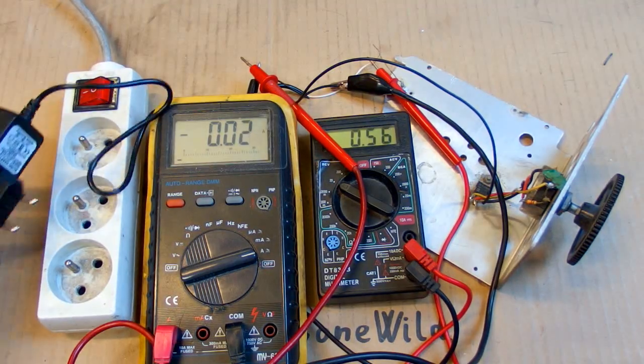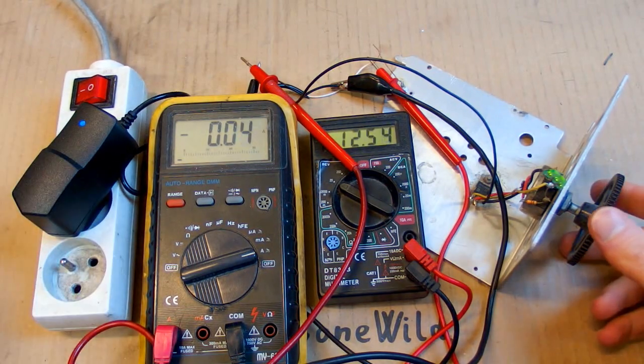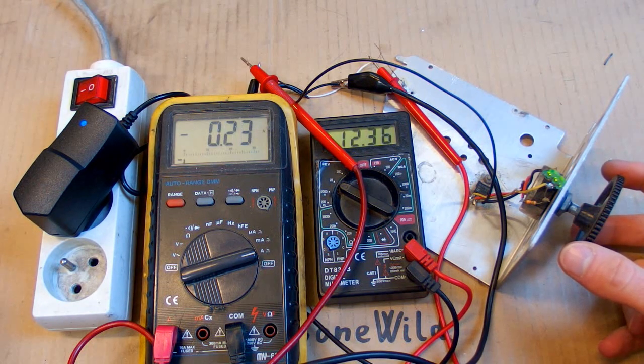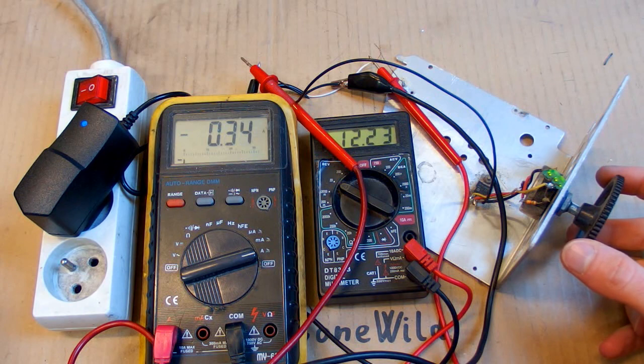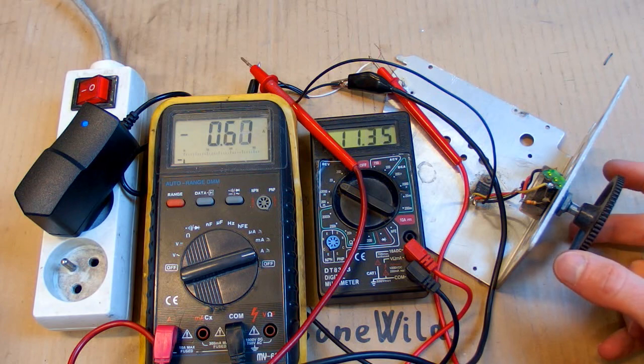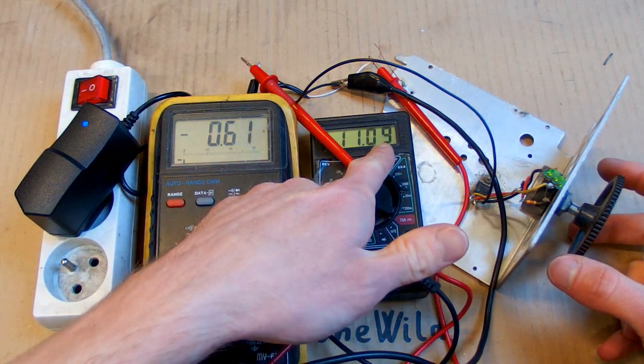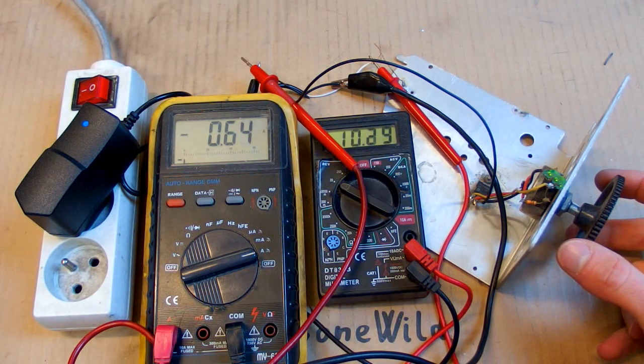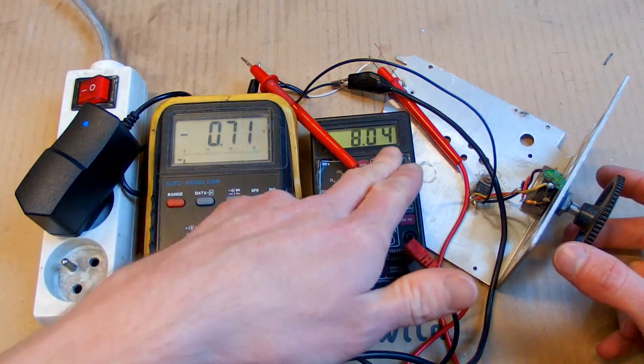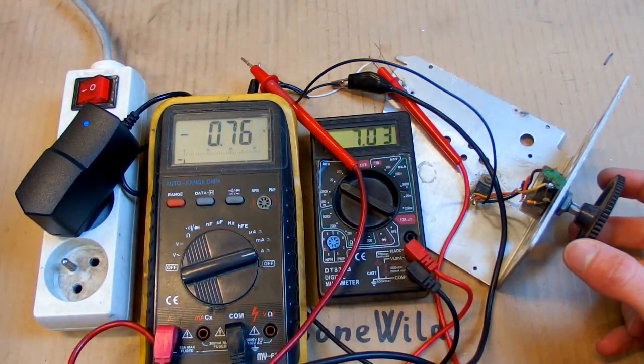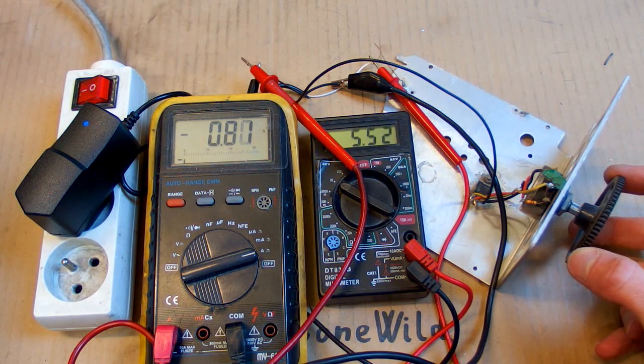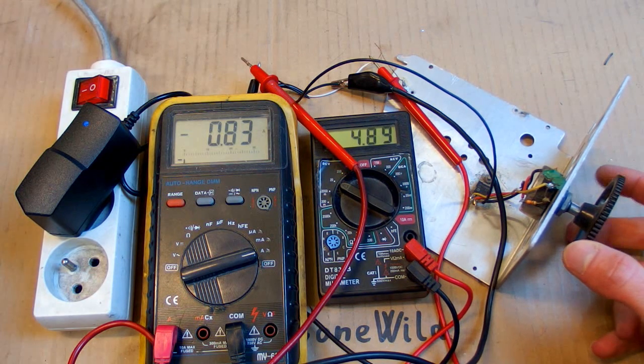Now let's try to load it using my variable test load. About 0.2 amps, 0.3, 0.4, 0.5, 0.6, now the voltage is going down to about 11 volts. About 0.7 amps, and the voltage is just 8 volts. 0.8 amps, and the voltage is 6 volts, only 0.8 amps.